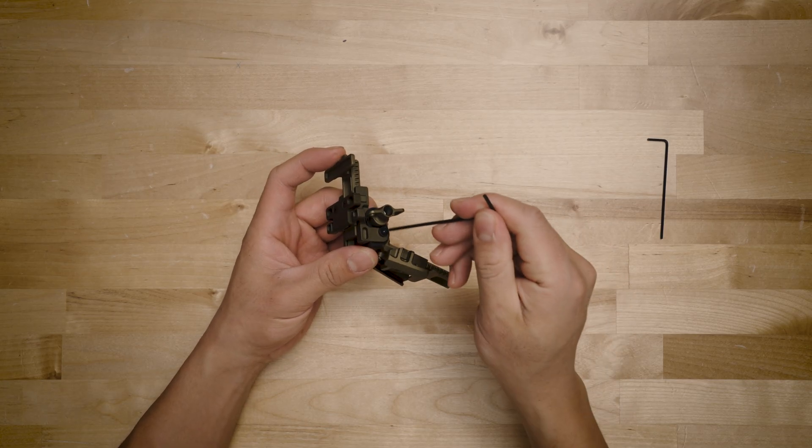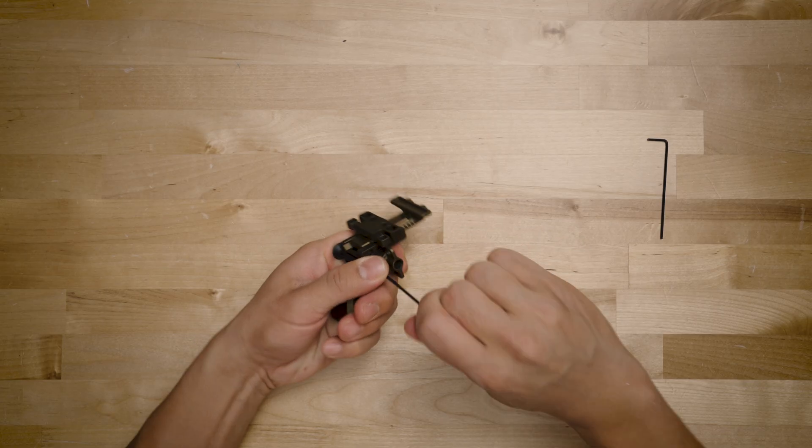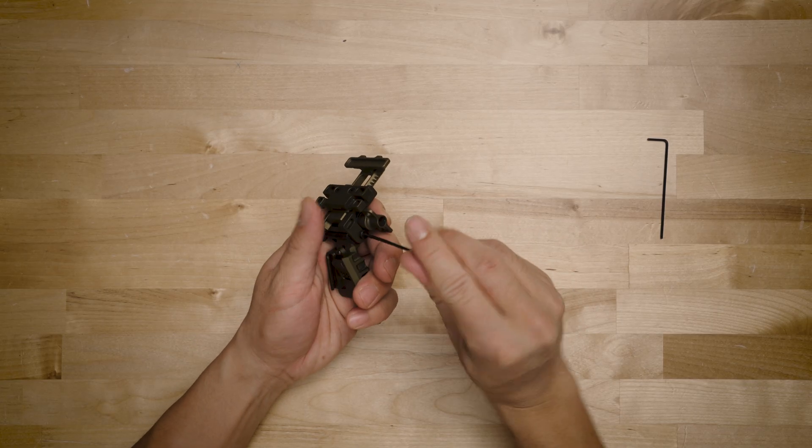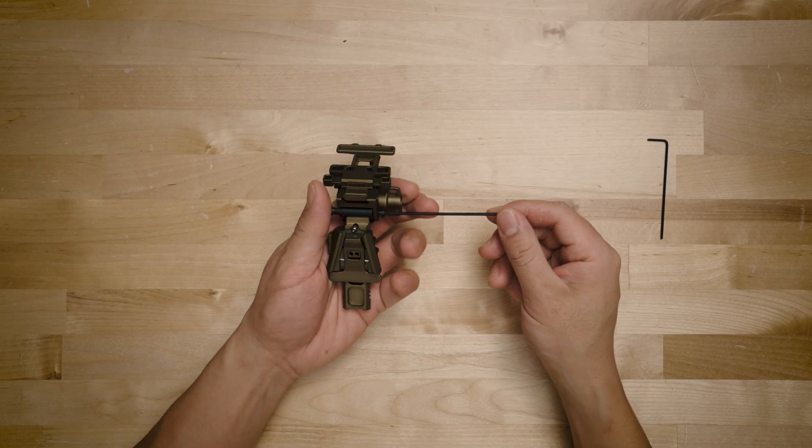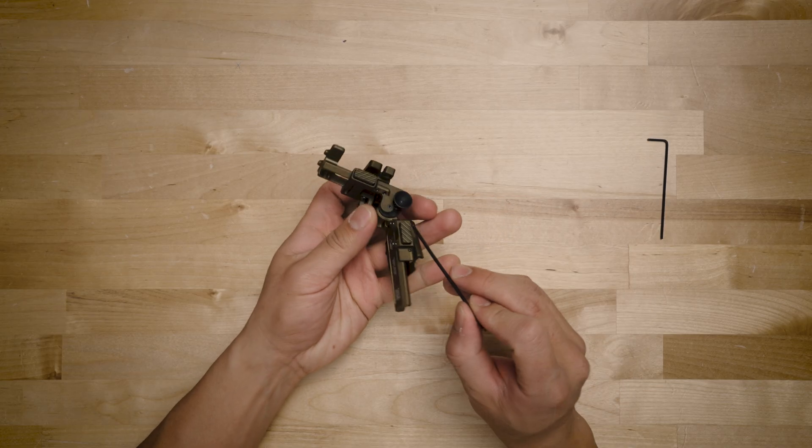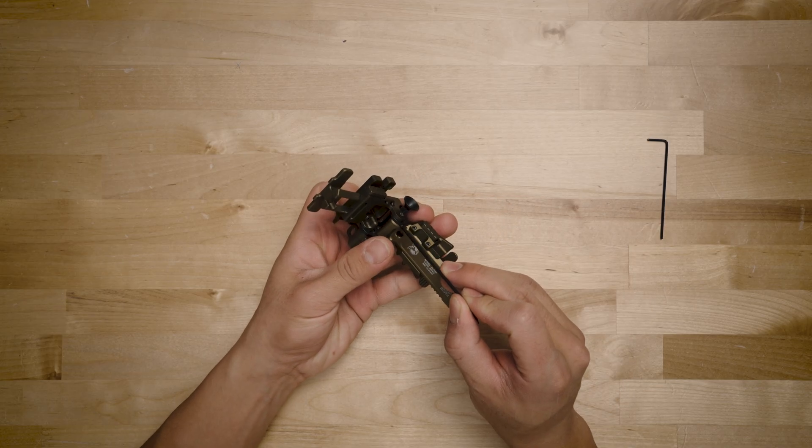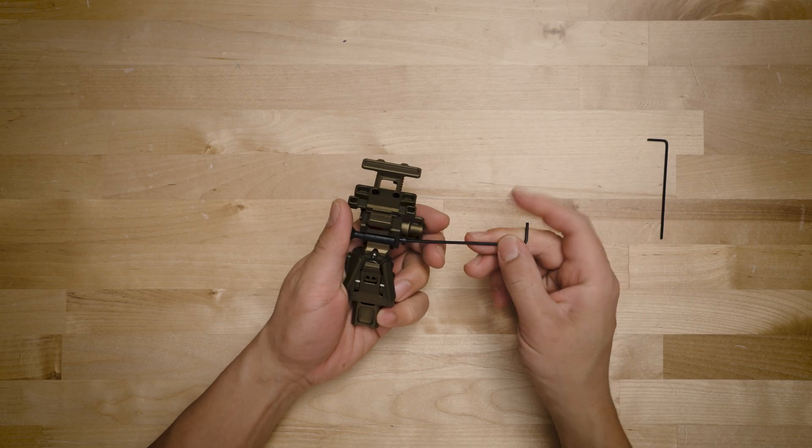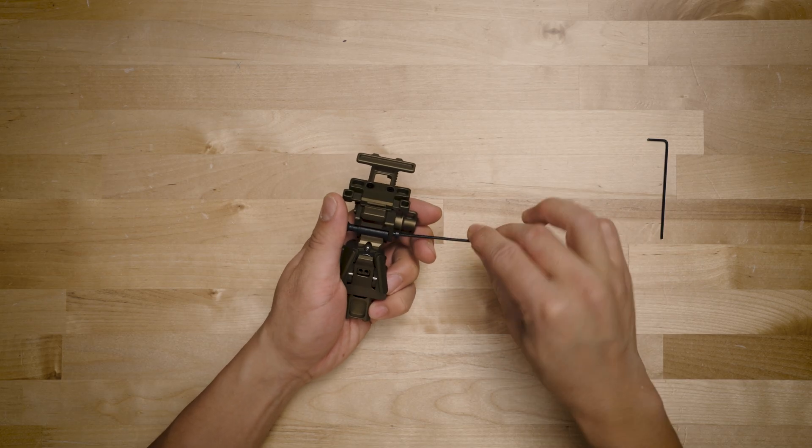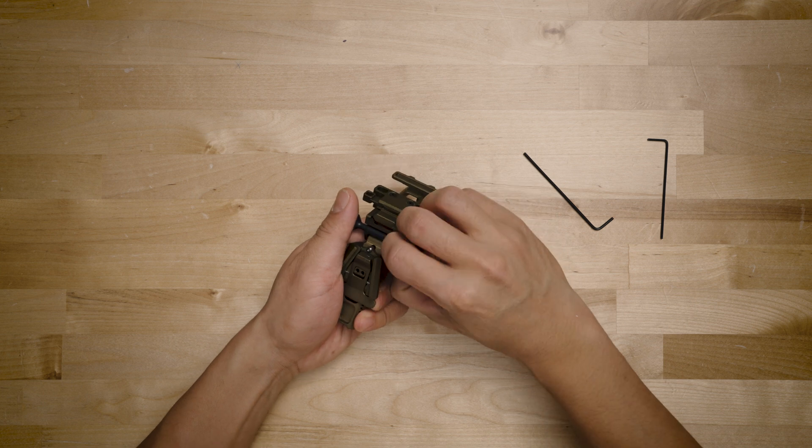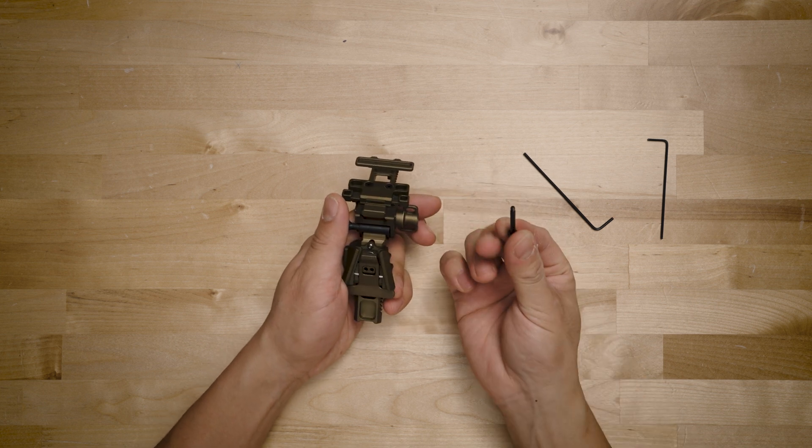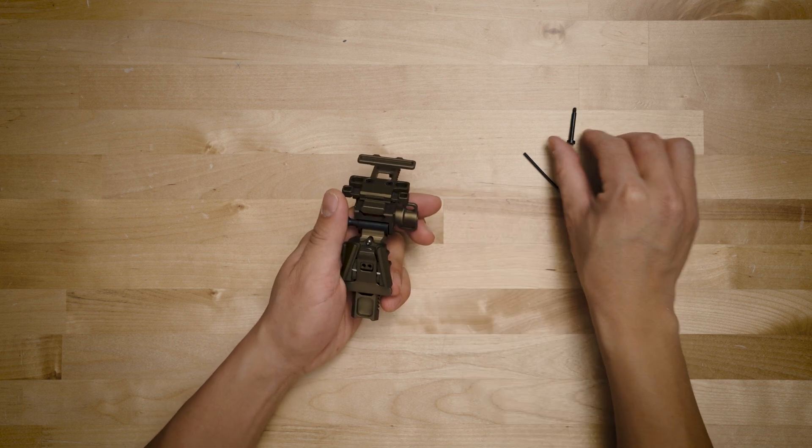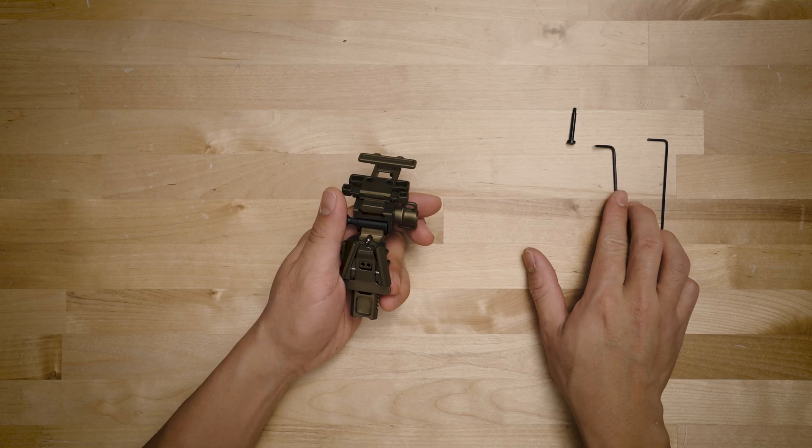And then what you're going to do is you're going to put this guy in here and unscrew this part that holds the mount together. So you'll notice it doesn't screw out all the way because it's really only threaded for this section of the mount. Once it stops moving and you have it unscrewed all the way it can, you're going to set this off to the side. You're going to need that for a later bit.